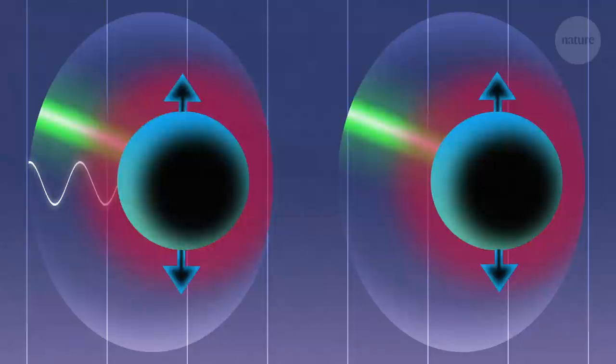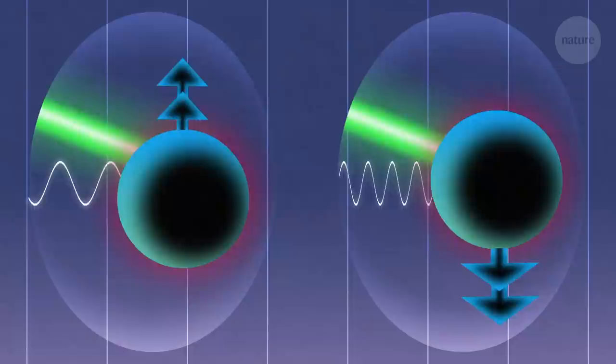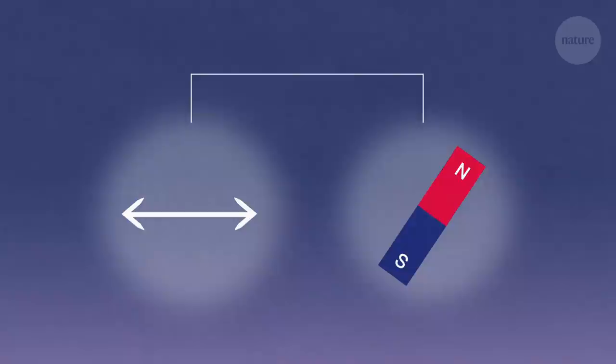This means that the NV center needs one frequency microwave to flick its spin from zero to up, and another to flick from zero to down. Measuring the difference between the microwaves reveals the strength of the magnetic field.